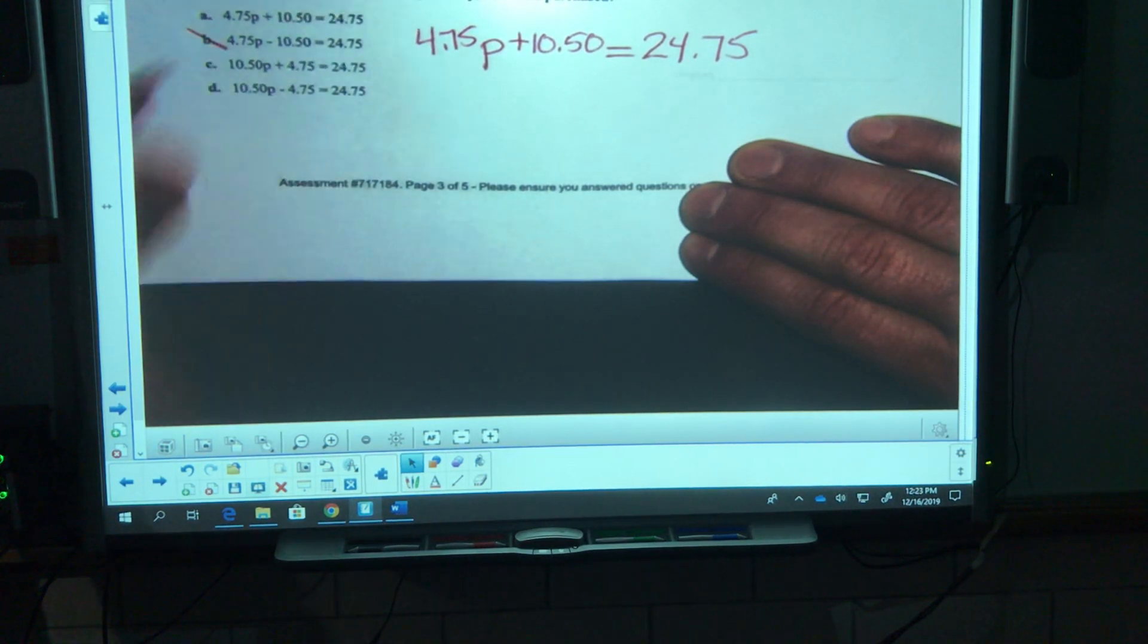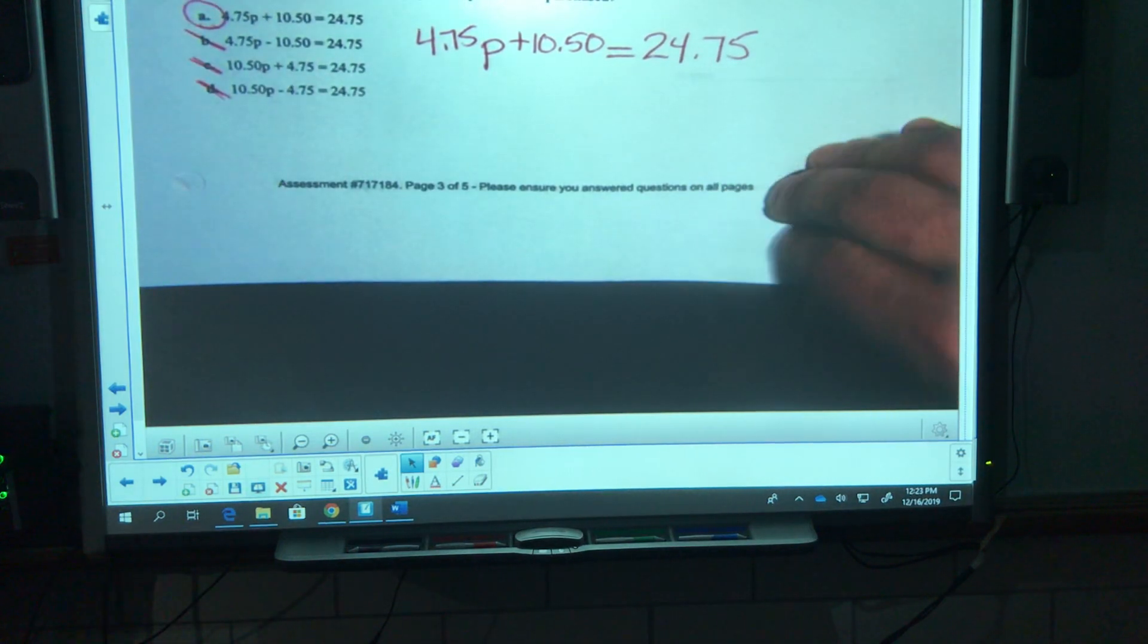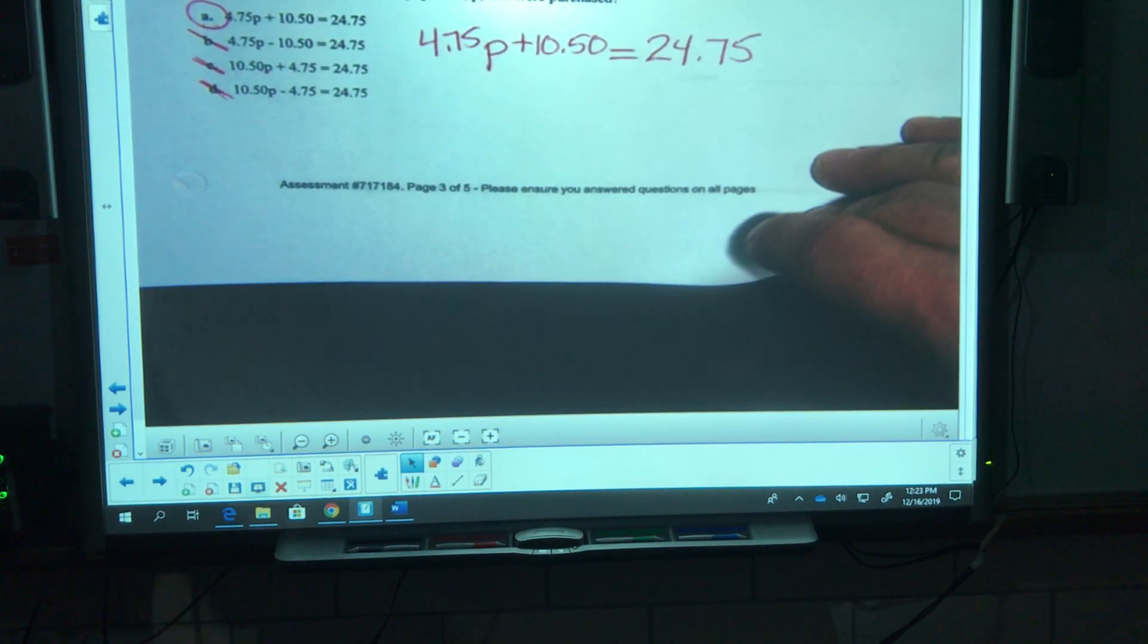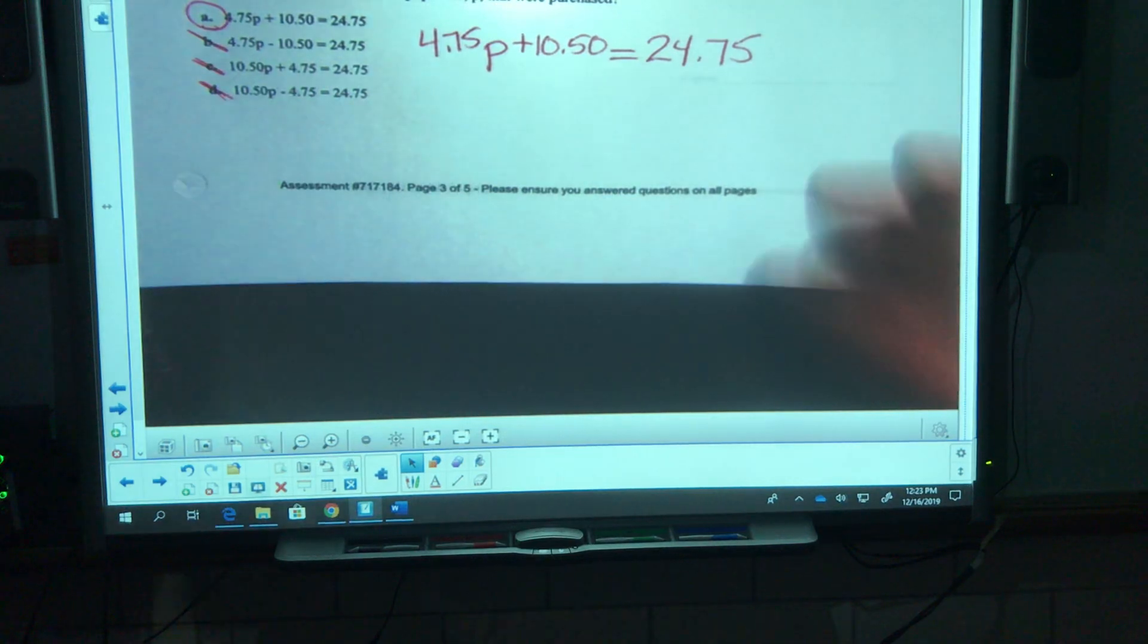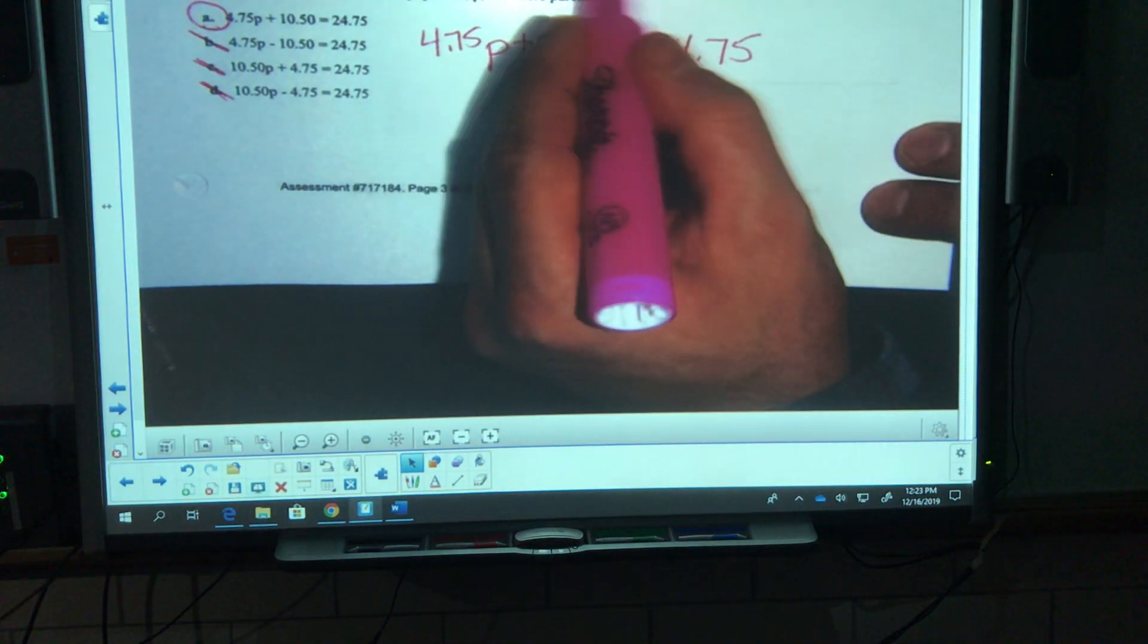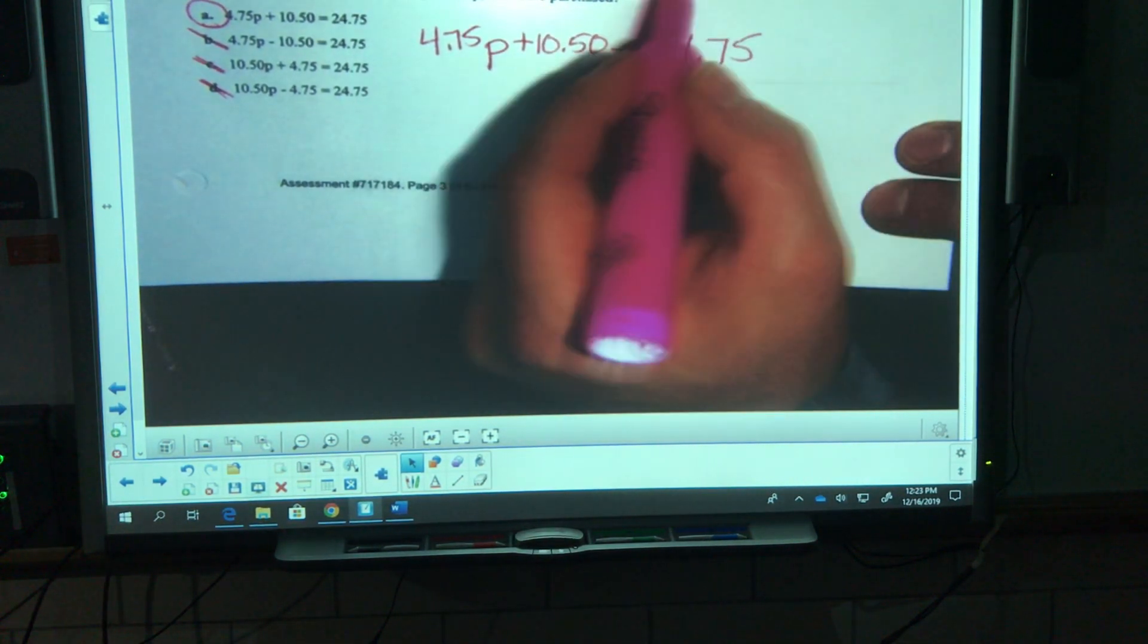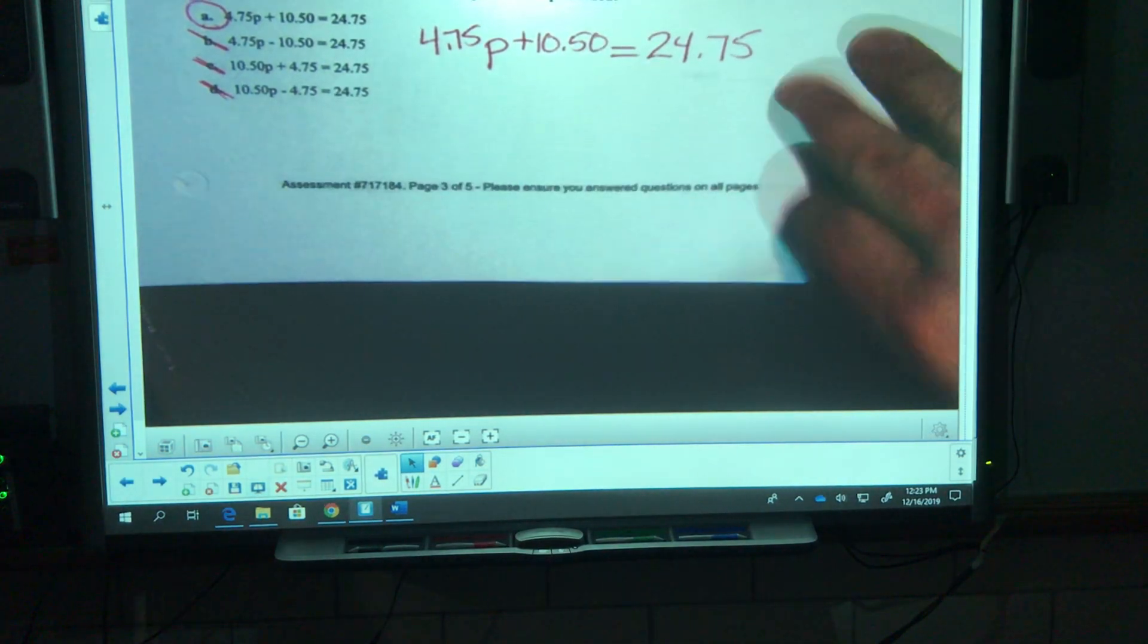Let's look at this first equation. 4.75 plus, whoa that one looks right. Nope, you're not going to subtract the car, can't be that. It's not 10.50 per popcorn, not 10.50 per popcorn. So yeah, it's going to be a. Take the information, if you want to do some highlighting for their car, popcorn, total. All that stuff is good stuff, make sure you're highlighting.